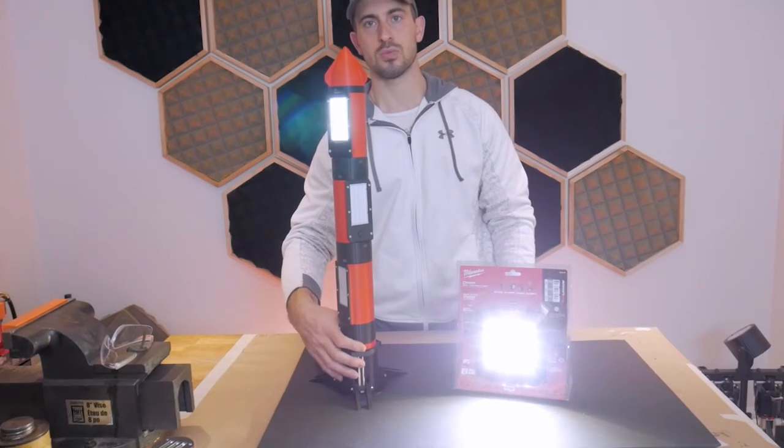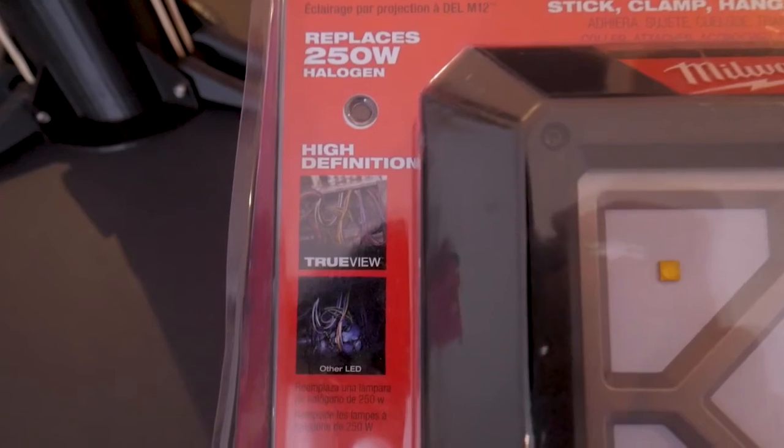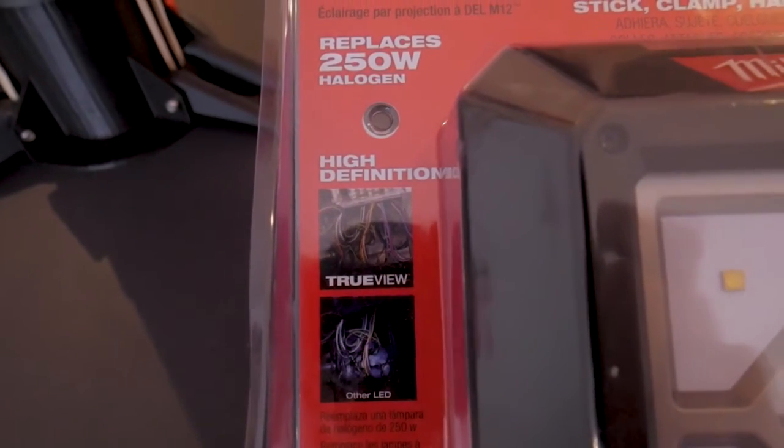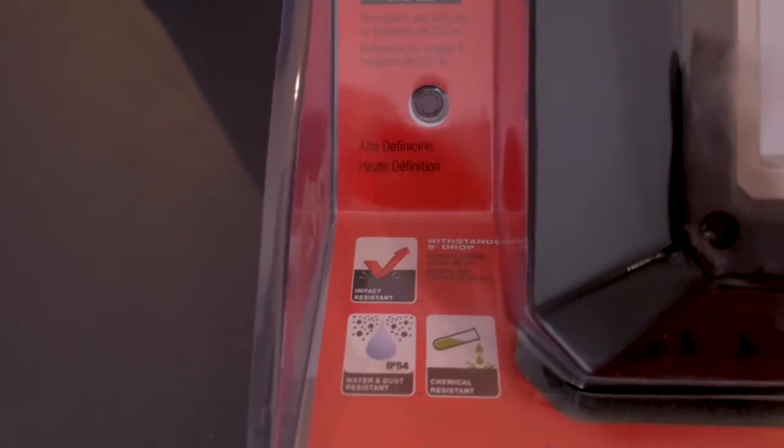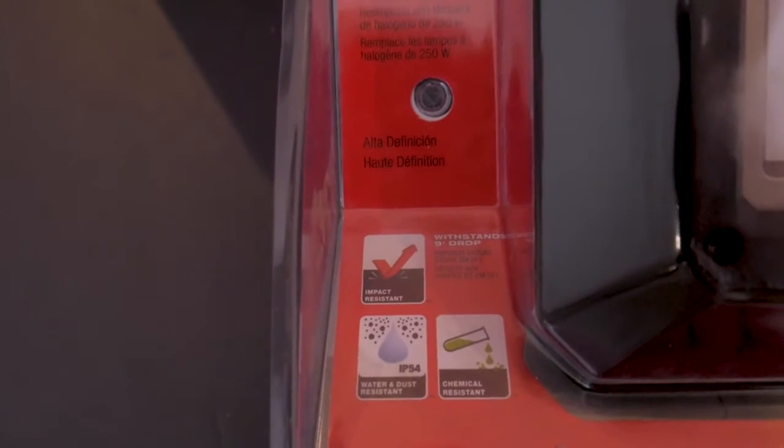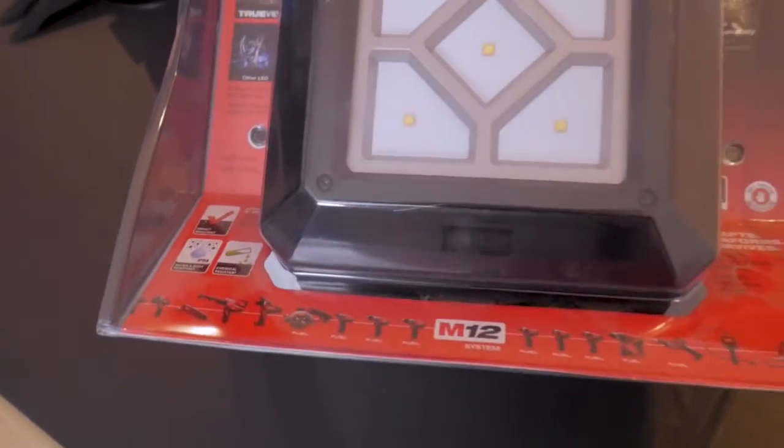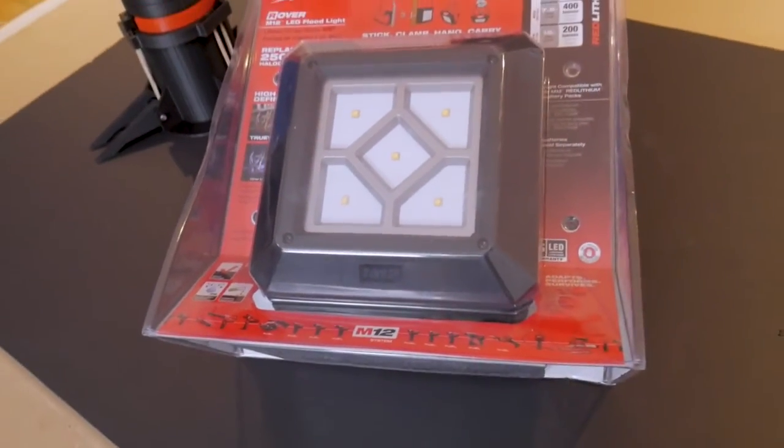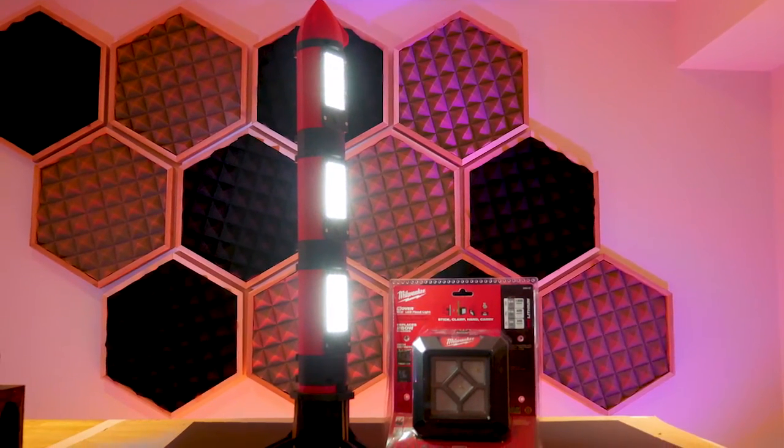The final comparison is going to be in impact resistance and durability, and the Milwaukee light will definitely take the win here as it is an injection-molded light. Mine has been 3D printed of PLA parts, and if I drop mine the likelihood of it breaking is quite high. But at the very least, I do have the 3D printable files so I can fix mine.